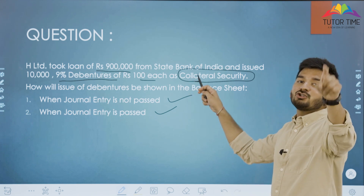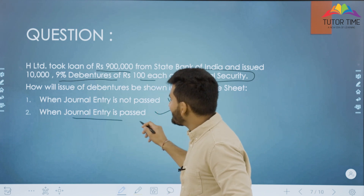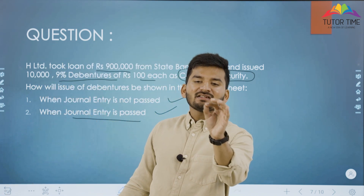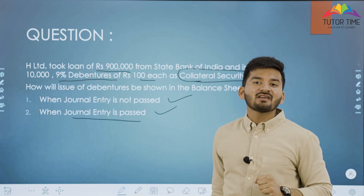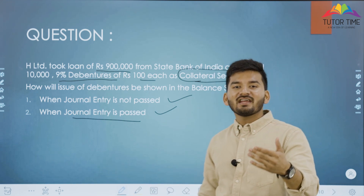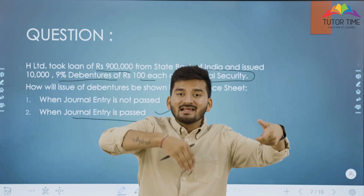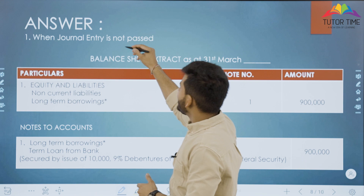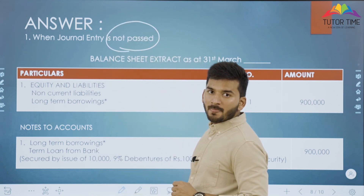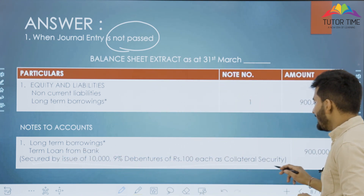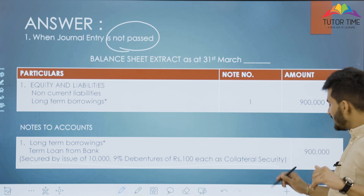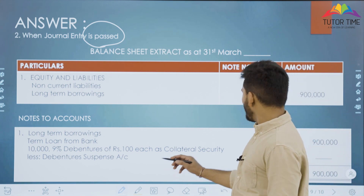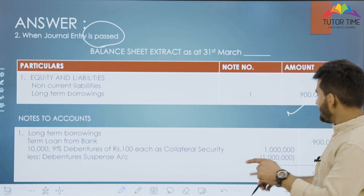When entry is not passed: just write a disclosure line under the loan — '10,000 9% debentures of Rs. 100 each were issued as collateral security.' When entry is passed: journal entry is Debenture Suspense Dr. to 9% Debenture Account — 10 lakh. Disclosure: under the loan, show debentures in the inner column, less Debenture Suspense, outer column nil. The loan of 9 lakh remains. No problem.